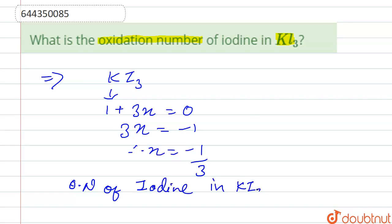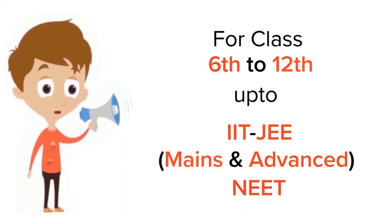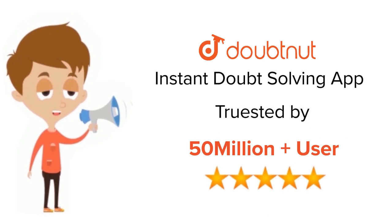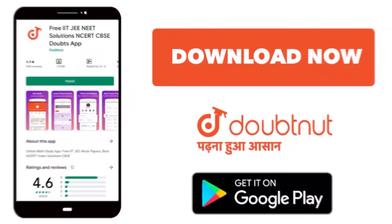in KI3 is equal to minus 1 by 3. Thank you. For class 6 to 12, IIT-JEE and NEET level, trusted by more than 5 crore students, download Doubtnet app today.